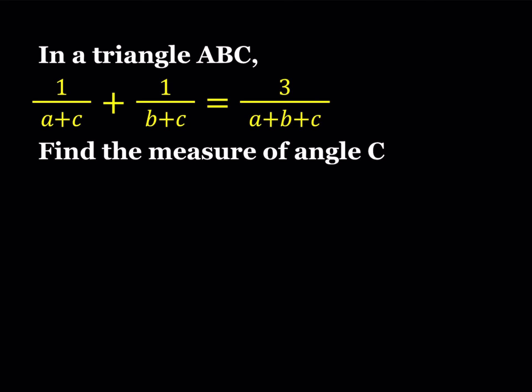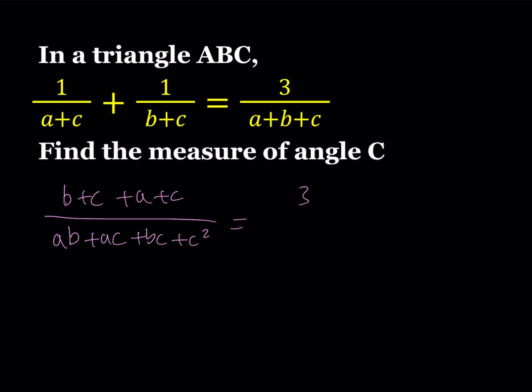We're going to be using some tools here, but let's go ahead and simplify this expression first. I'll make a common denominator. That's going to give me B plus C plus A plus C divided by the common denominator, which is just going to be the product. So let's go ahead and distribute that — it's going to give me AB plus AC plus BC plus C squared, and the right hand side is just going to stay like that for now.